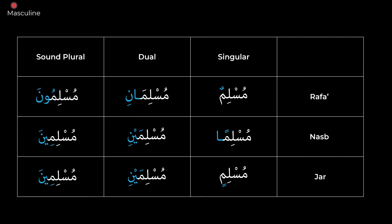When dealing with a masculine ism in rafa, it's simply muslimun — with a dhamma on the end, indicating singular and rafa. If it has an ani ending, it's dual and rafa. If it has an una ending, it's plural and rafa. So the three signs of rafa for a masculine ism are the dhamma ending, the ani ending, and the una ending.